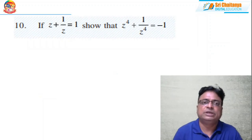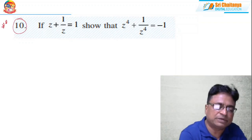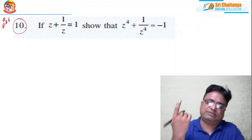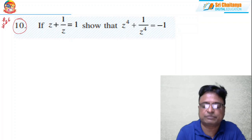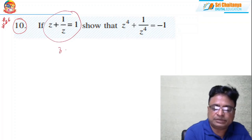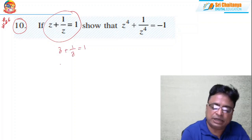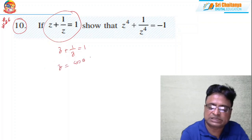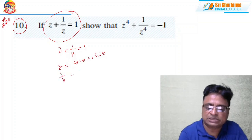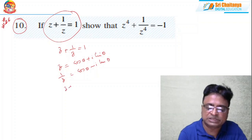Problem 10, the most important model: if z + 1/z = 1, find z⁴ + 1/z⁴. There are several ways of solving this. Multiplying through, z² - z + 1 = 0. Solving using the quadratic formula z = (-b ± √(b² - 4ac))/(2a) gives z = (-1 ± i√3)/2.